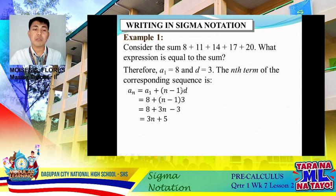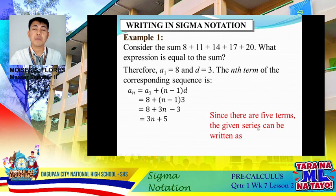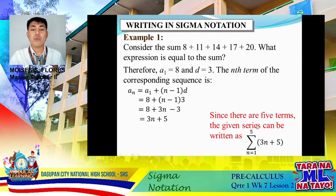We are asked to write it in sigma notation, so we affix the sigma symbol. Our lower bound starts at 1, and we stop at 5 because we have 5 terms. Therefore, the given series can be written as the summation of 3n + 5 as n goes from 1 to 5.